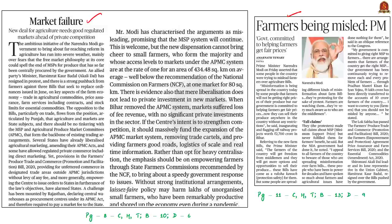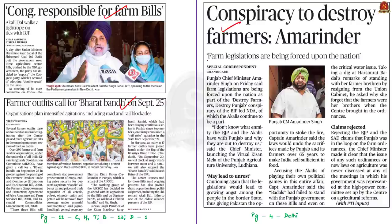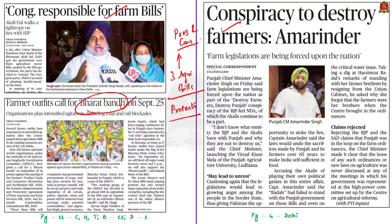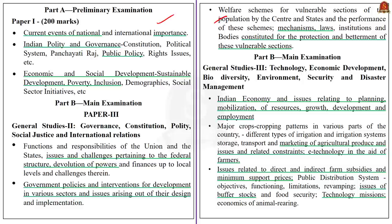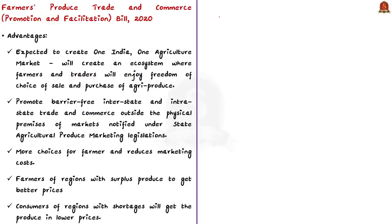This discussion is based on news articles about the three agricultural bills recently passed by the Lok Sabha. These bills have led to protests by farmer producer organisations and various sections of farming society across many states. Let us see the pros and cons of these three bills. The three bills are: the Farmers' Produce, Trade and Commerce (Promotion and Facilitation) Bill of 2020; the Farmers' Empowerment and Protection Agreement on Price Assurance and Farm Services Bill of 2020; and the Essential Commodities Amendment Bill of 2020.